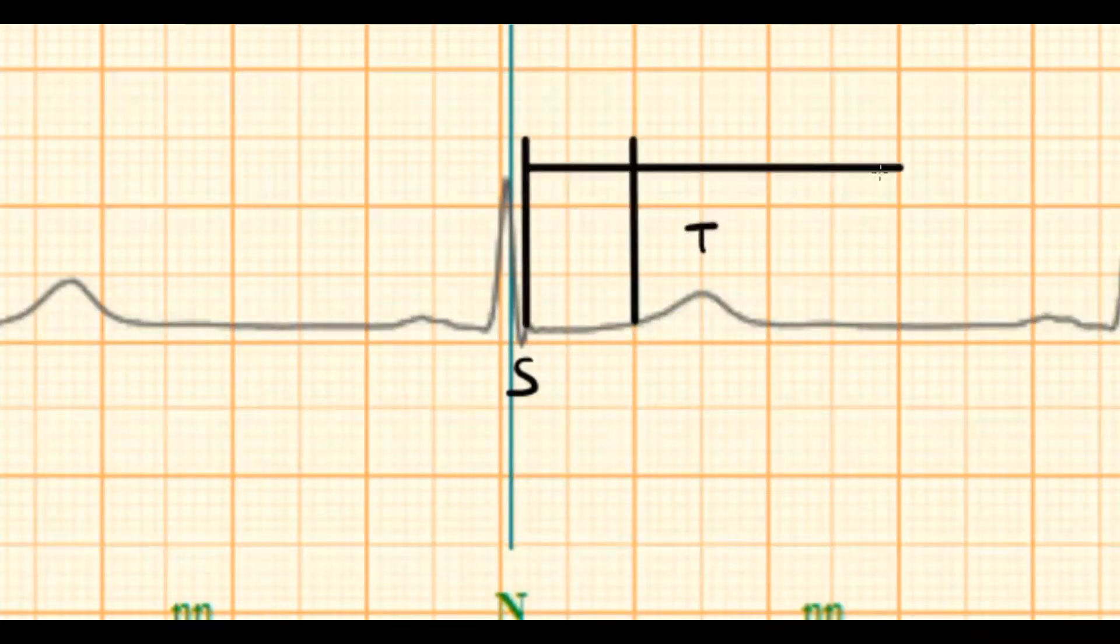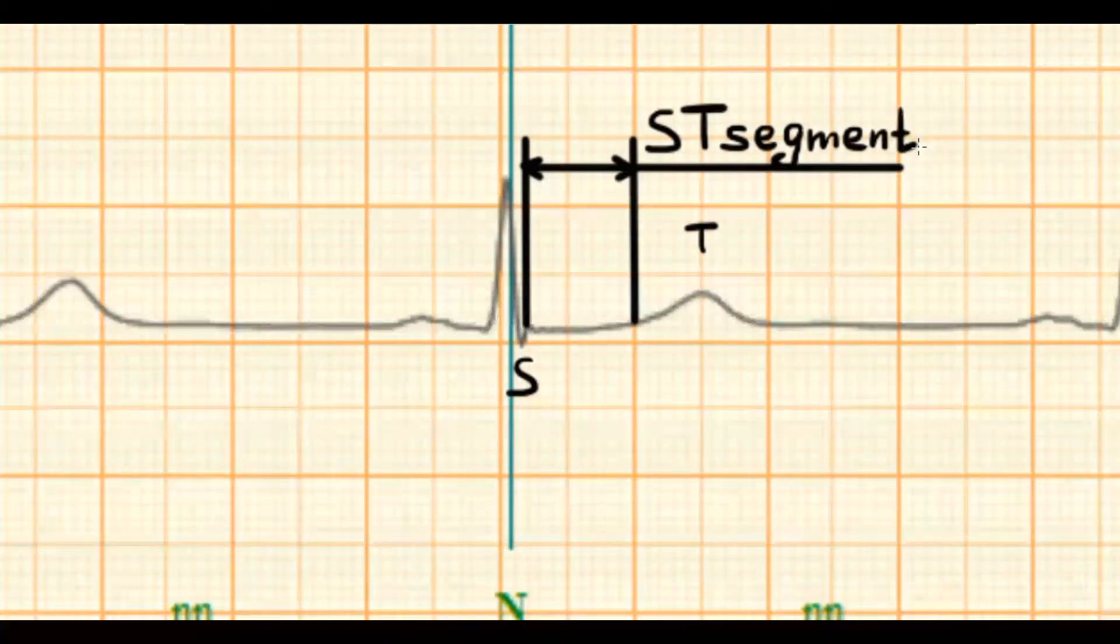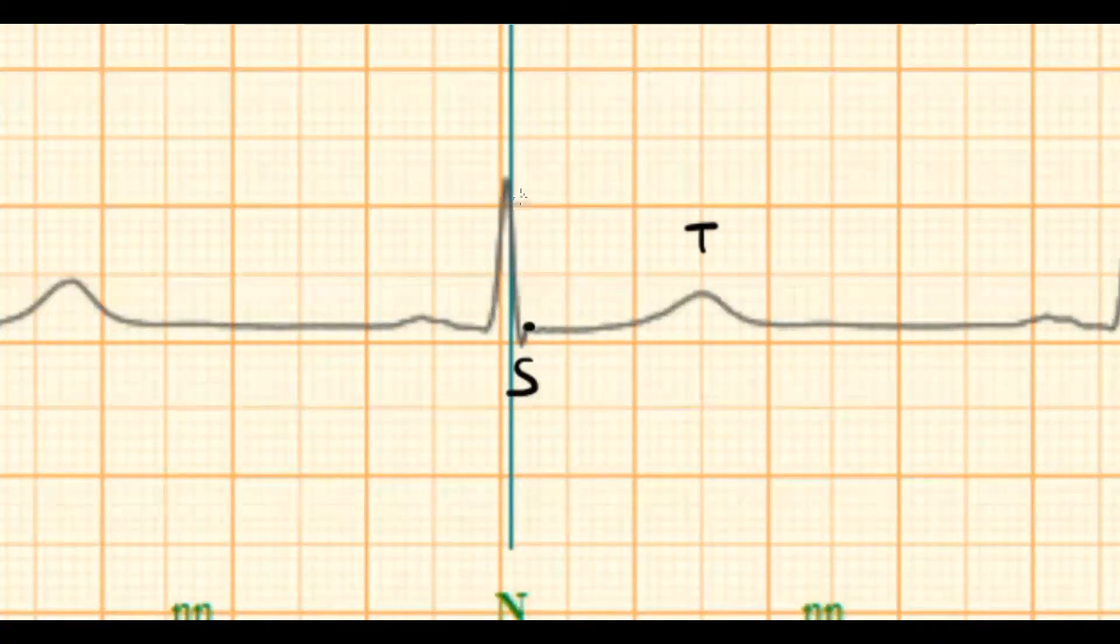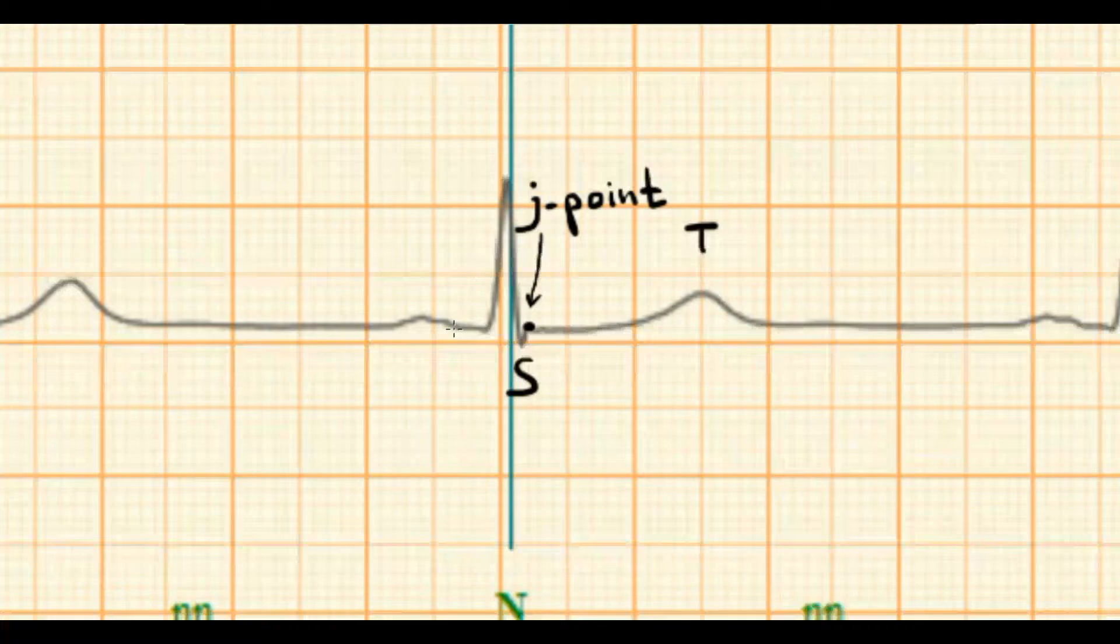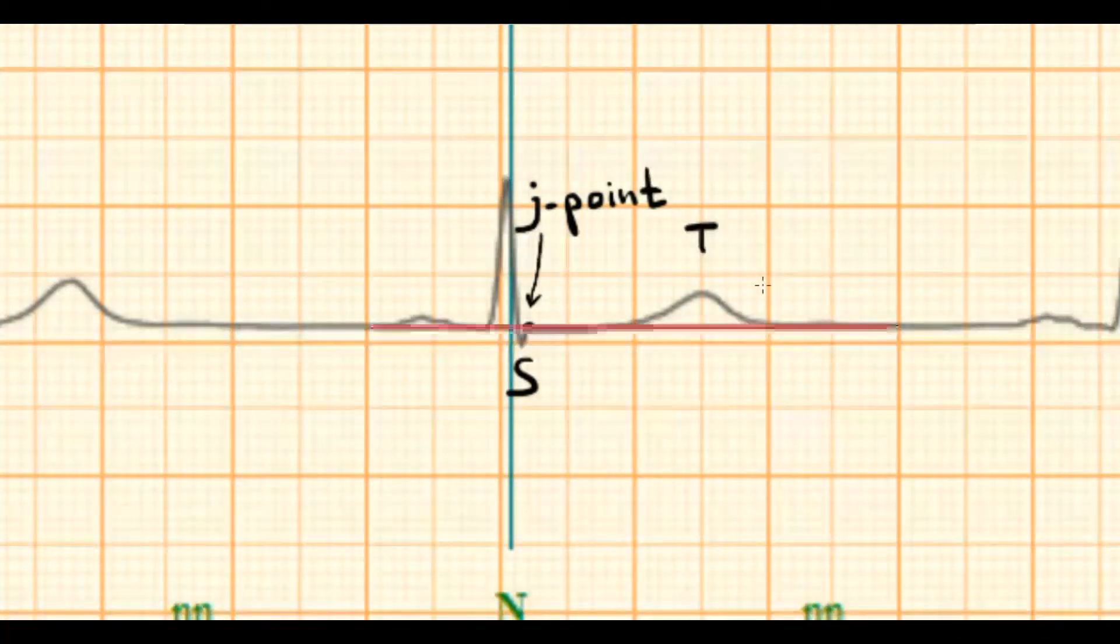This is ST segment. The point where QRS complex goes to the ST segment called J point. The J point is the key for understanding the changes of ST segment. As a baseline we use TP or PQ segment.